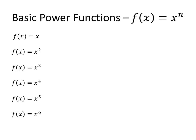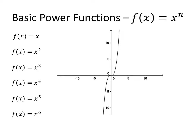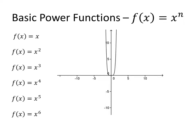In order to explore end behavior, we're going to look at some basic power functions — that is, x to a power with nothing else. Starting with f of x equals x, our degree 1 polynomial. Then x squared, x cubed, x to the fourth, x to the fifth, and x to the sixth. If you notice, there are a lot of similarities between even-powered functions and odd-powered functions — x squared, x to the fourth, and x to the sixth look a lot alike, and so do x cubed, x to the fifth, and beyond.